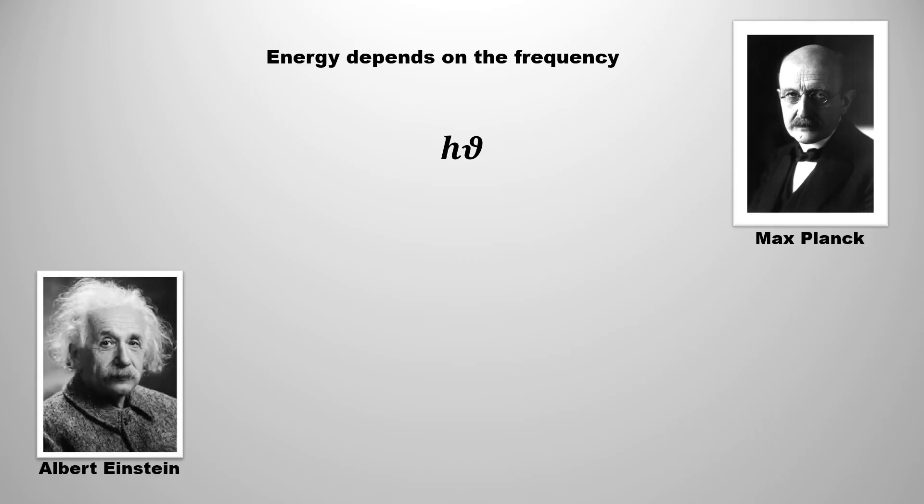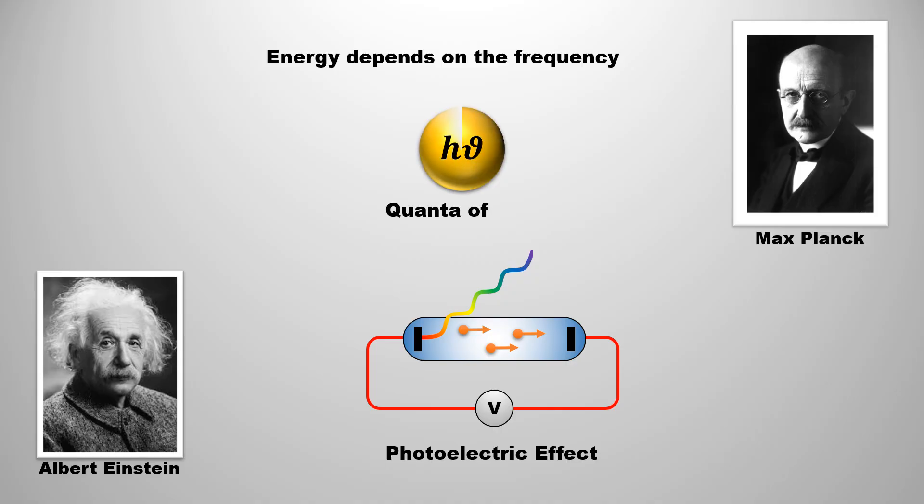A few years later, Albert Einstein explained photoelectric effect using the idea of Planck, after which h nu came to be called as quanta of light. Max Planck was awarded the Nobel Prize in 1918 for this quanta of light.